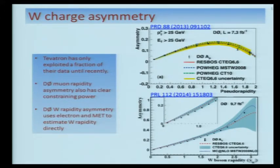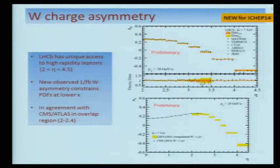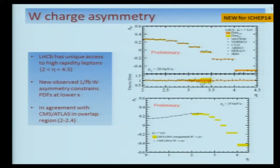D0 has also measured the W asymmetry recently. The Tevatron has only exploited a fraction of their data until very recently, but they now have a 7 inverse femtobarn muon asymmetry measurement with very small error bars compared to pre-LHC PDFs, and they can also directly reconstruct the W rapidity using the electron and missing-energy four-vectors. LHCB also has a stake in this game, with unique access to high lepton rapidity up to 4.5. New for this conference, they presented a measurement based on 1 inverse femtobarn constraining PDFs in an x-range inaccessible to other experiments, and their results agree well with CMS and ATLAS in the overlap region.